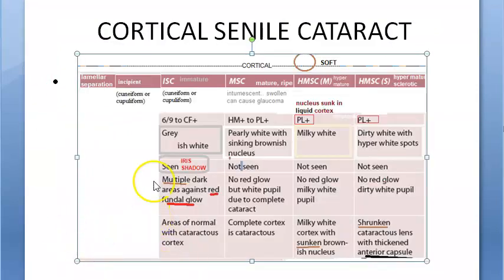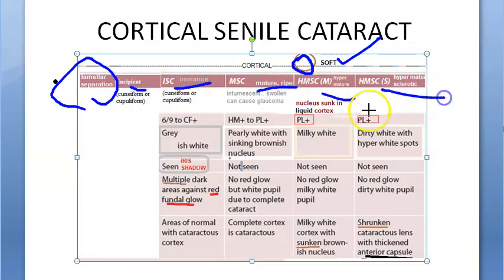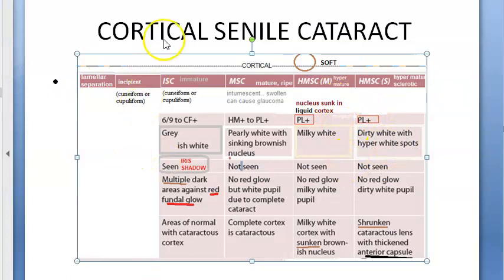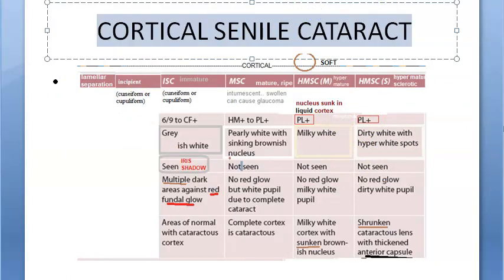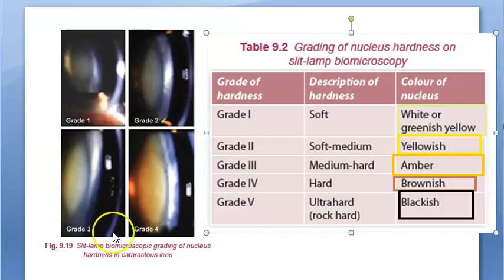Now moving on to cortical senile cataract: it is soft cataract, where the cortex is affected and not the nucleus. The stages are lamellar separation, incipient, immature, mature or ripe, and hypermature. Under hypermature there are two types — morgagnian and sclerotic. We will look at each of these stages in detail in the next video.